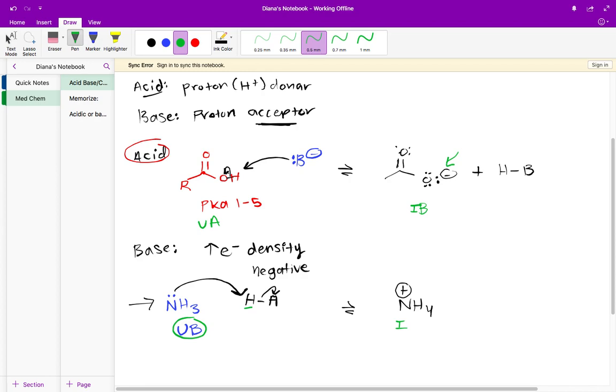And this bond is going to break putting those electrons onto that A. It's going to generate a conjugate base. So let's see what happens to this UB. The UB to begin with was NH3.